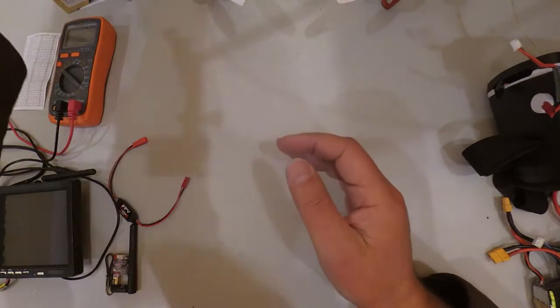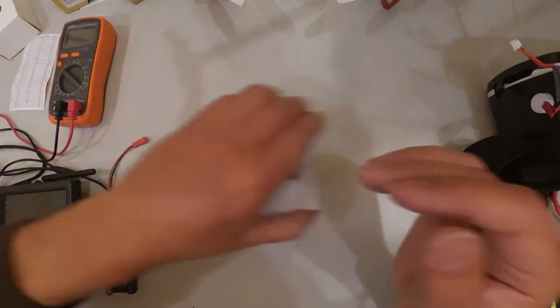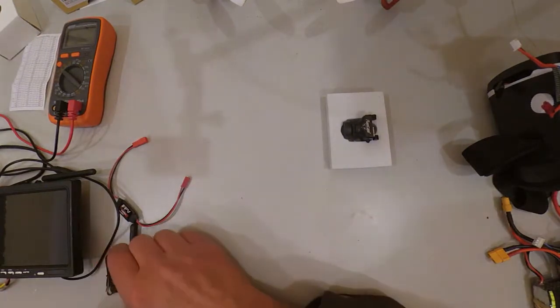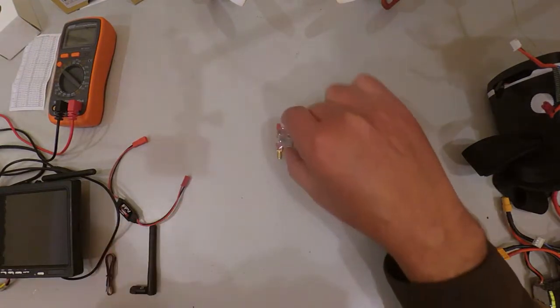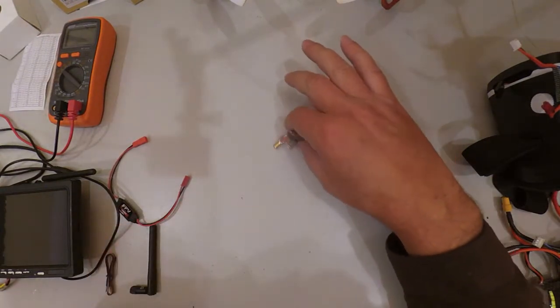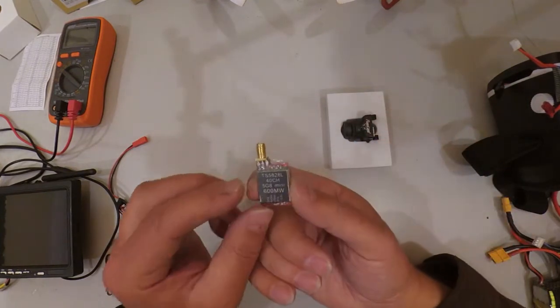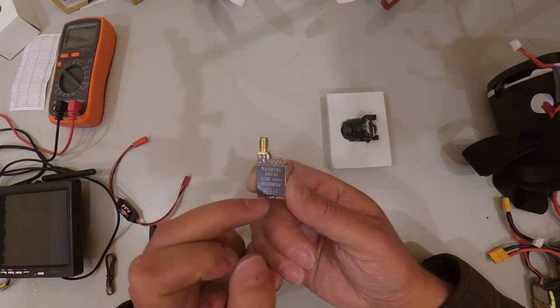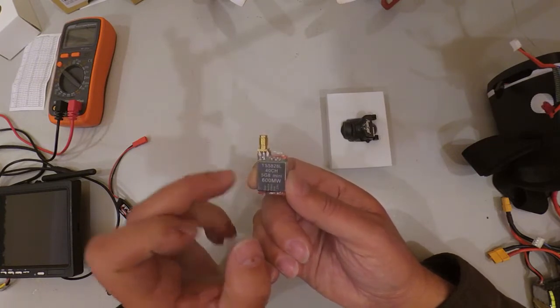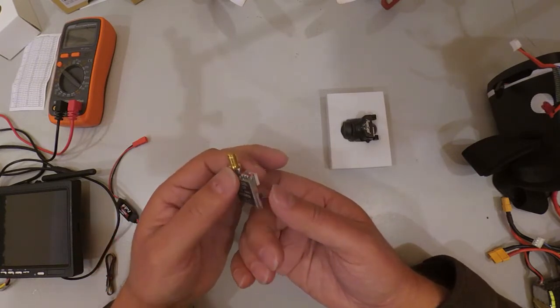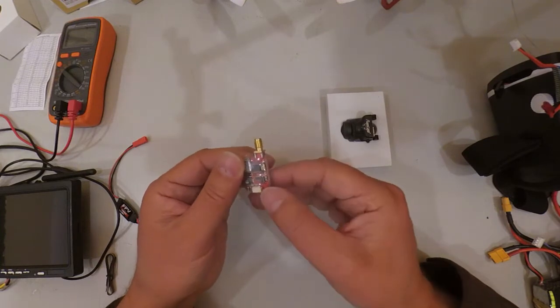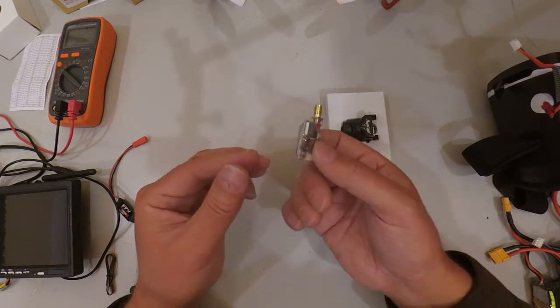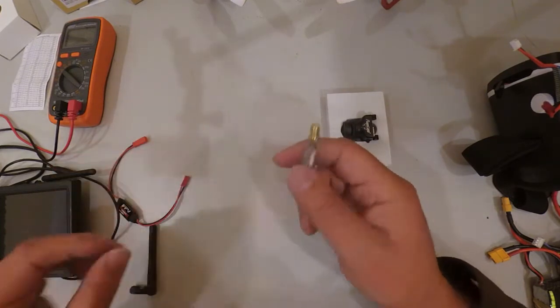The next thing you're going to need is something to transmit with. I've got a very tiny 600 milliwatt transmitter. It's way overpowered for what I'm ever going to be using. It's a 5.8G, very small, very cheap, and that's why I got this.